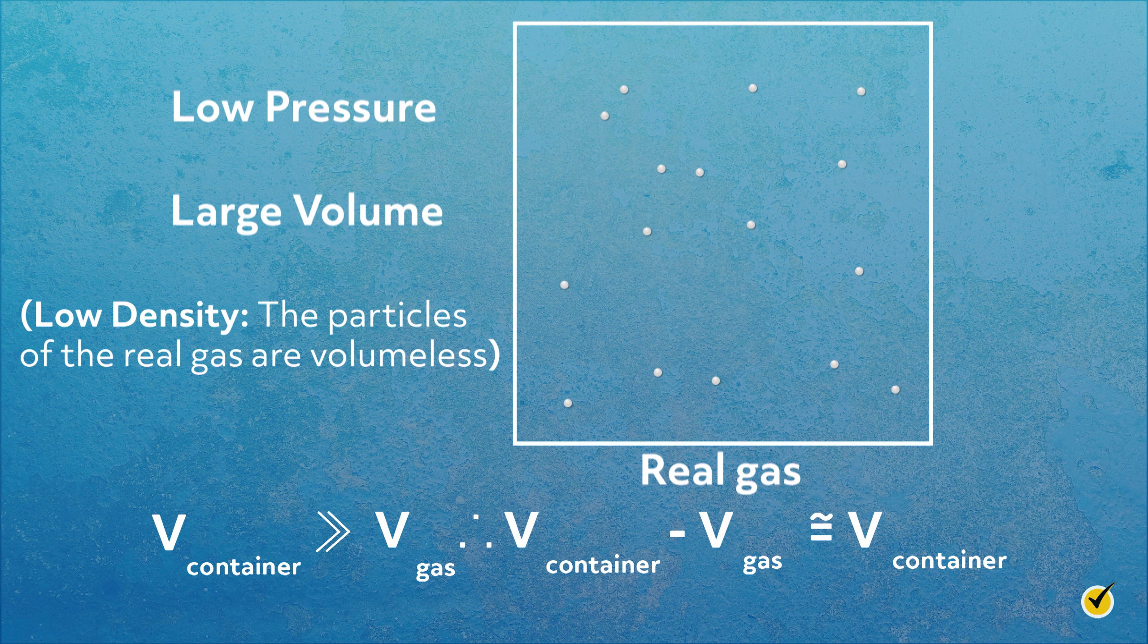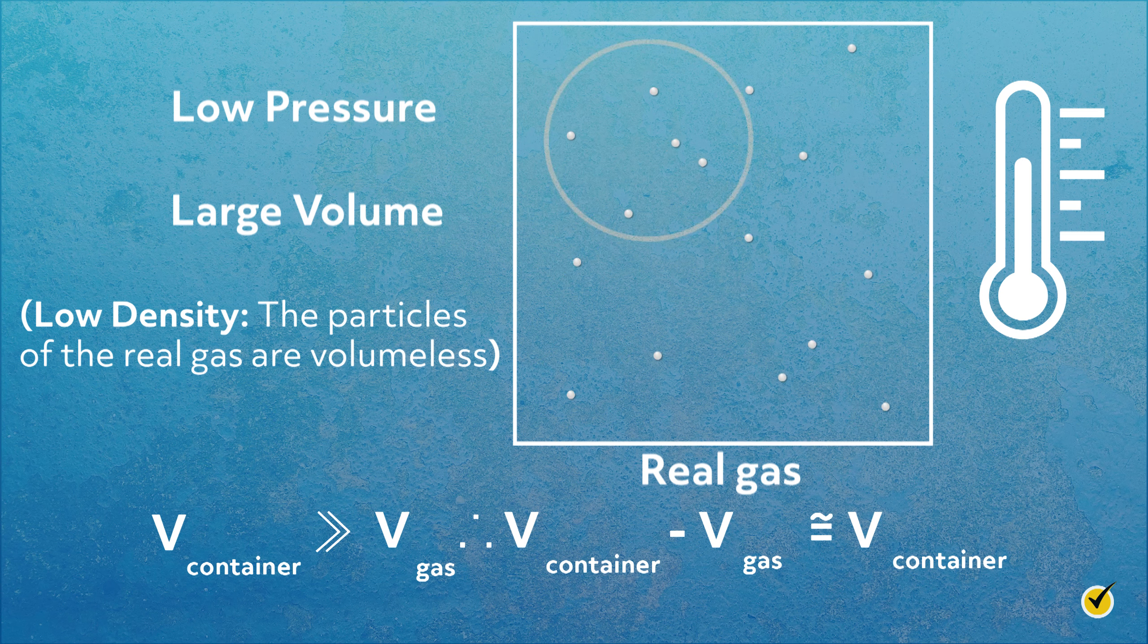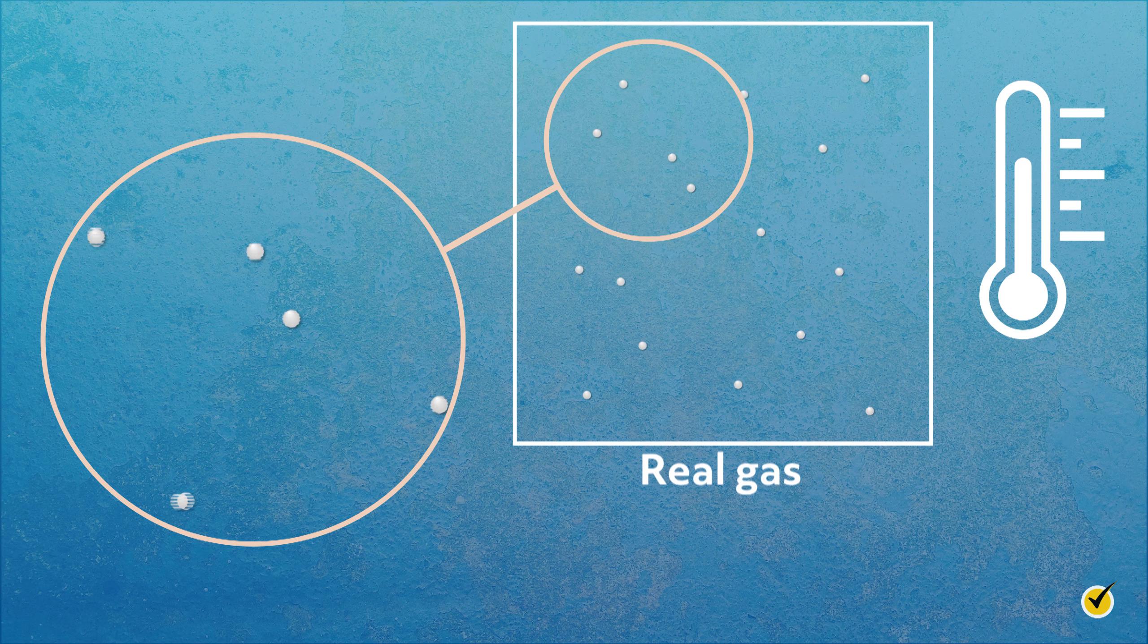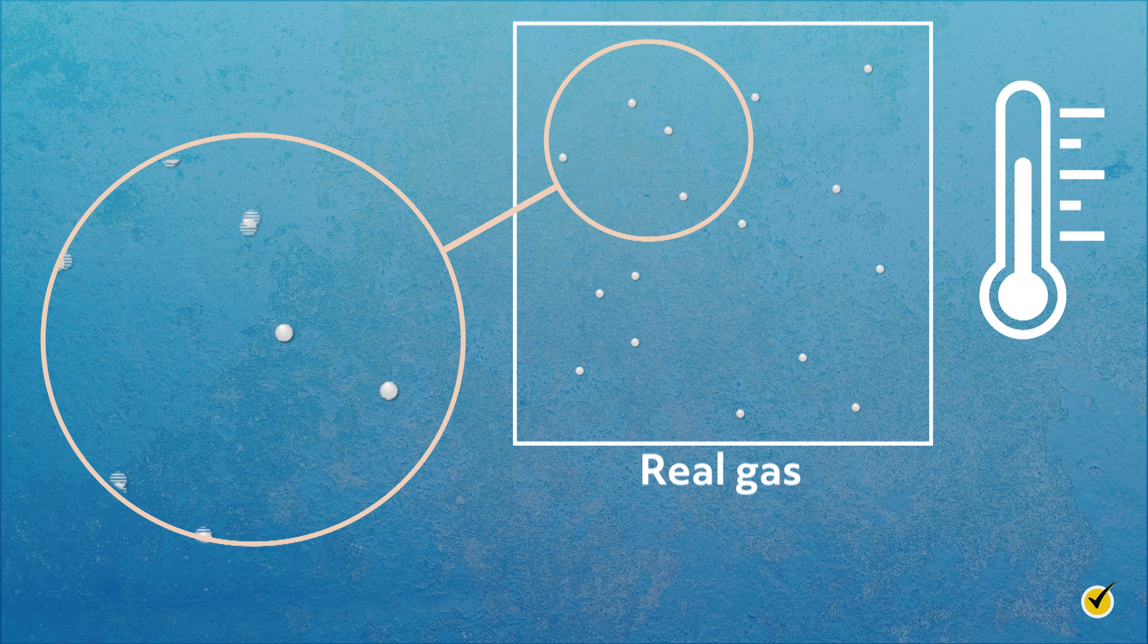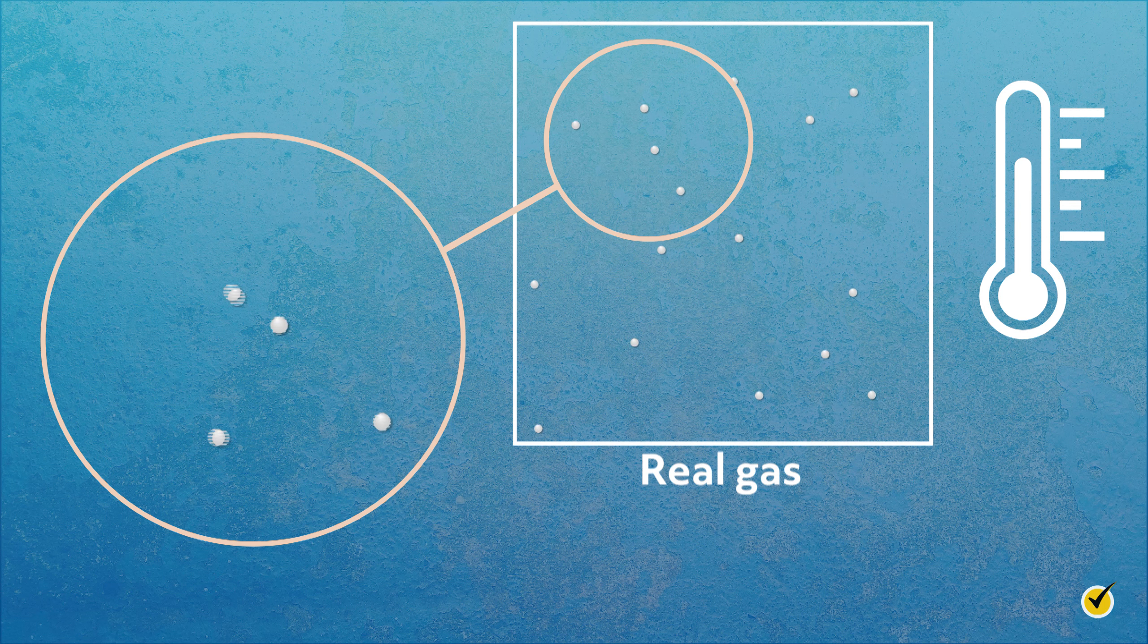Secondly, as the temperature of a gas is increased, the average speed of the particles increases. This means that when the particles pass each other, they have very little time to interact, which, again, helps them mimic the behavior of an ideal gas. Thus, at relatively low pressures and high temperatures, real gases behave like ideal gases.